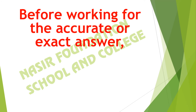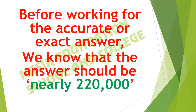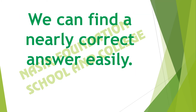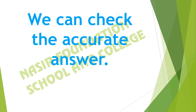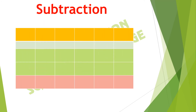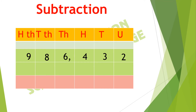Before working for an accurate or exact answer, we know that the answer should be nearly 220,000. Now we can find the nearly correct answer easily. We can also check the accurate answer. A chart has been shown — we will write 986,432 as the minuend and 772,531 as the subtrahend, using the subtraction sign.